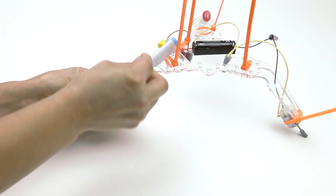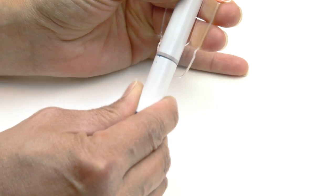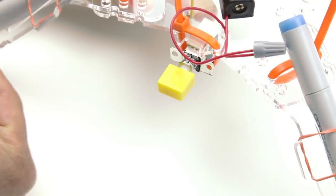Markers! Attach a marker to each of the two remaining legs as shown. Then just remove the marker caps, press the power switch, and watch it draw.